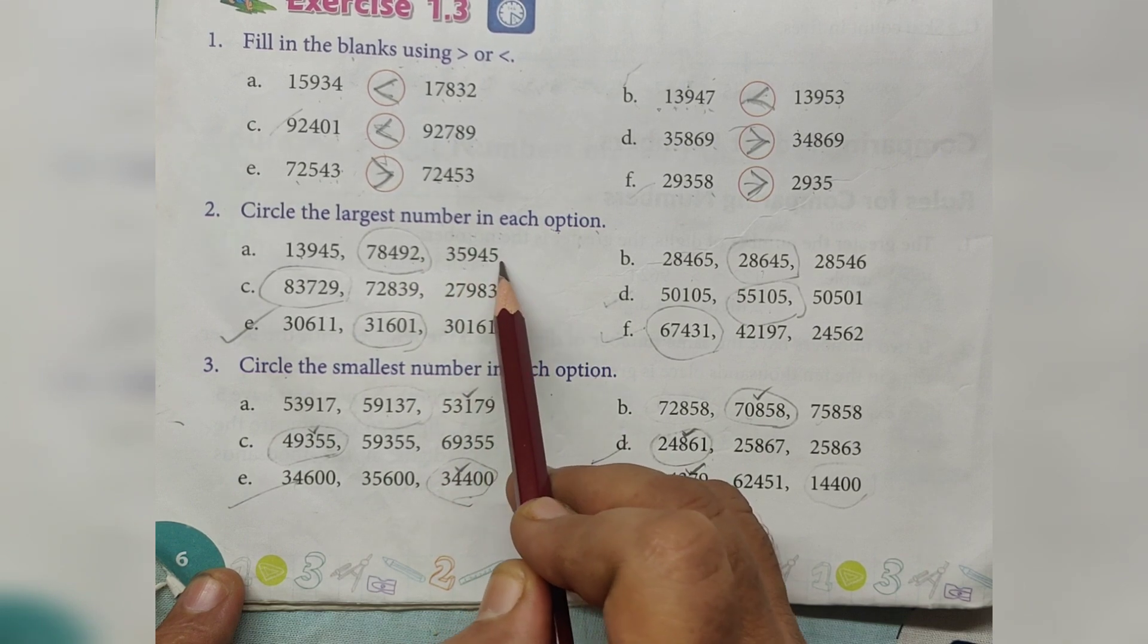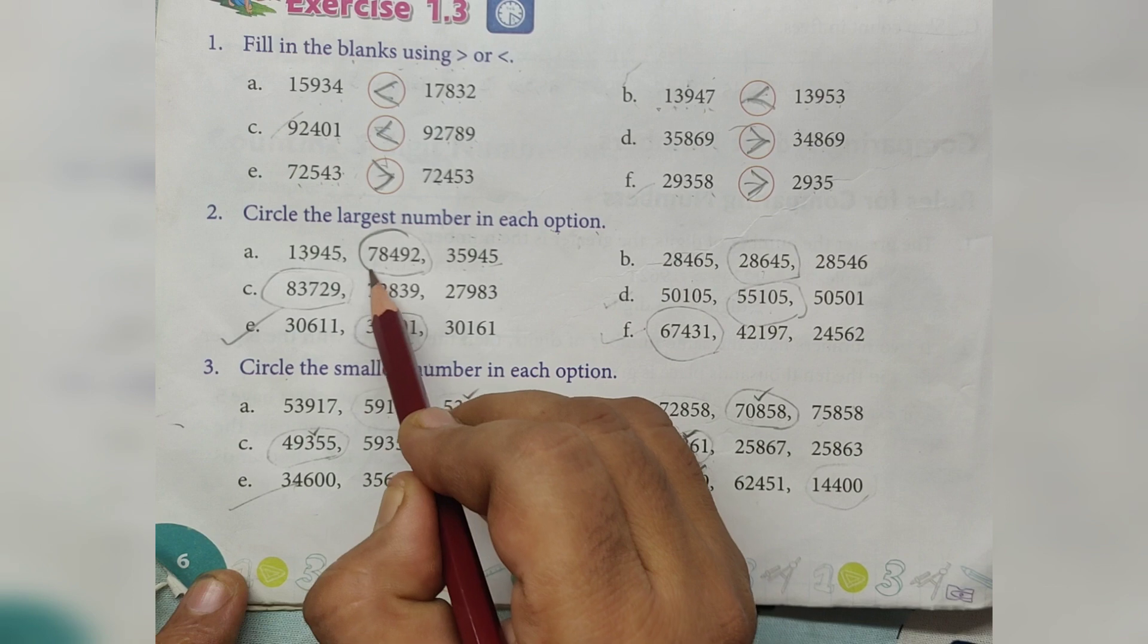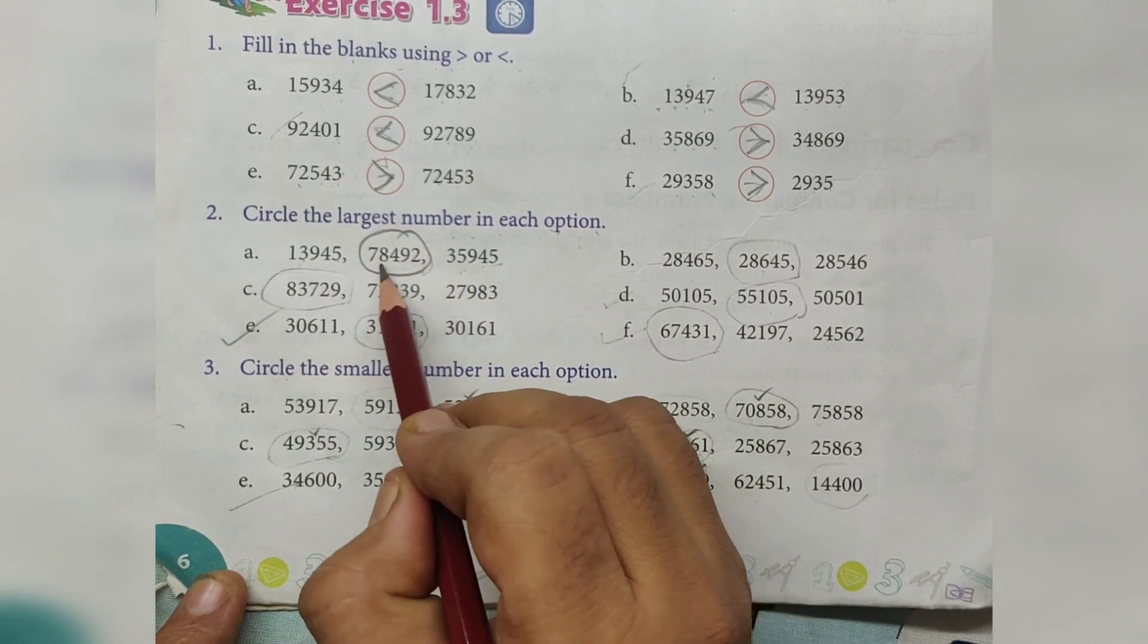35,940, which is the largest number? 78,000. 13,000, 35,000, 78,000.